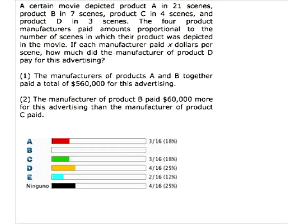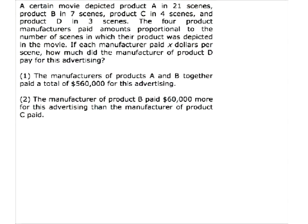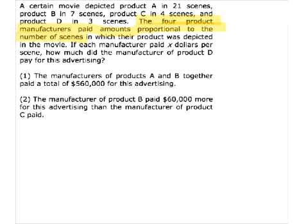So here are your class statistics — definitely all over the place on this one. There's going to be some learning to do here. Let's talk about this problem. A certain movie depicted product A in 21 scenes, B in 7 scenes, C in 4 scenes, D in 3 scenes. And then you have this statement: for product manufacturers, paid amounts proportional to the number of scenes. Can anybody tell me what that means? If you know, go ahead and type an explanation in the text box.